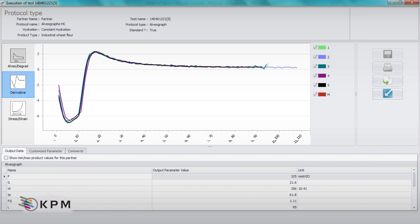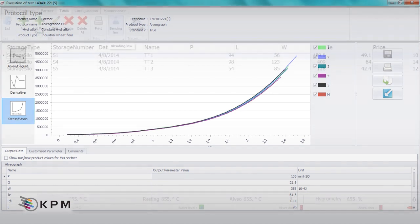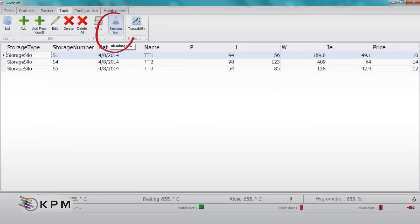Additional parameters such as first derivative, stress strain parameter and mixing consistency are now available. A new feature for optimizing wheat and flour blends has also been introduced.